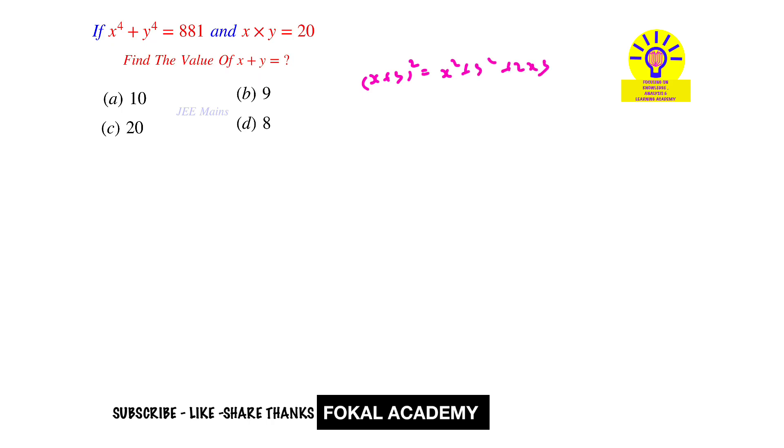Here we don't know x square plus y square value, but xy value is given as 20. How can you find the x square plus y square value? We have xy given as 20.